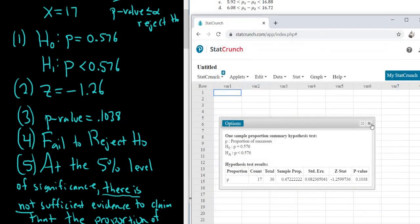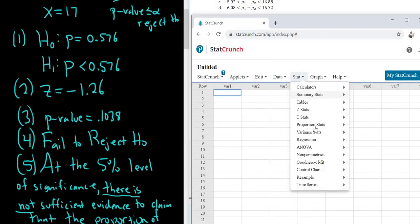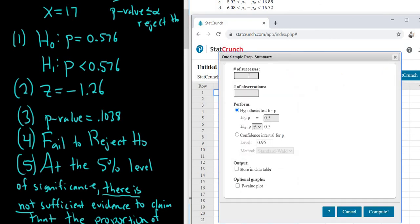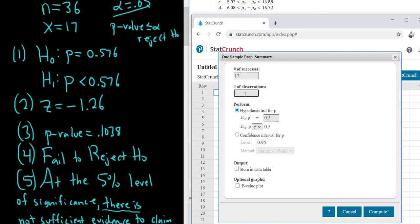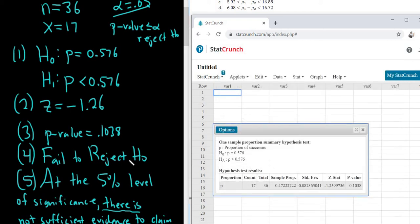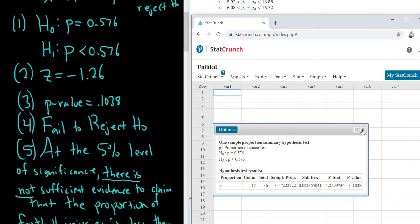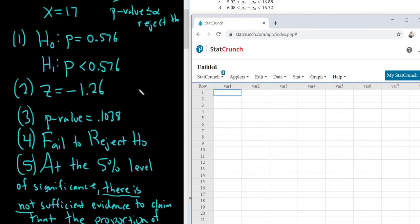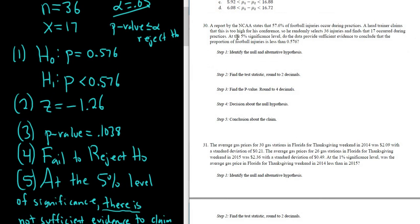Then you go to StatCrunch. That part's pretty easy, I think, because you just go to Stat, Proportion Stats, One Sample with Summary. Type in your successes, which is 17. Type in your observations, which is 36. And then change this to 0.576. And it's less than. Click Compute. There's our Z. There's our P value, right?